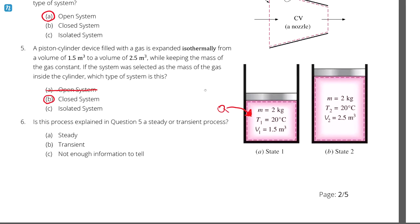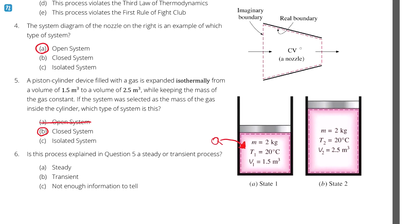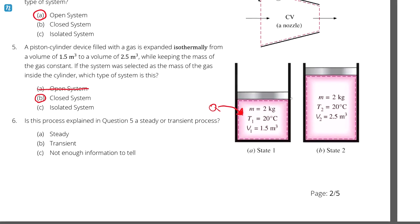Question number six. Is this process, explained in question five, a steady or transient process? Well, remember that we defined a transient process as being one where properties change with time. A steady process is one where properties don't change in time. So if you looked at a steady process, regardless of when you look at it, all of the properties should be the same. They might change with respect to location. You know, if we were considering this nozzle up here, if we represented this as a steady process, the temperature at the inlet of the nozzle could be different from the temperature at the outlet of the nozzle. But for it to be steady, both of these temperatures have to stay constant with respect to time.